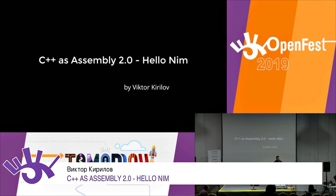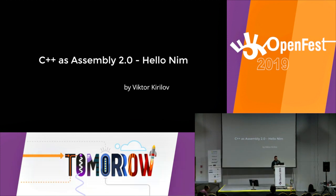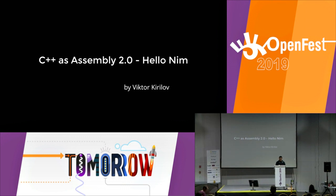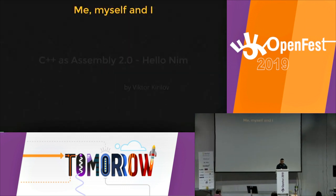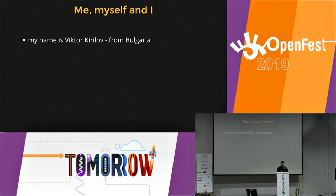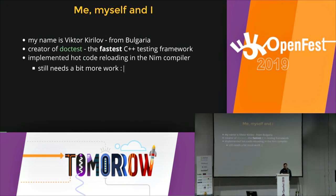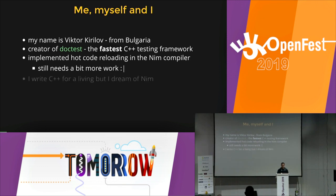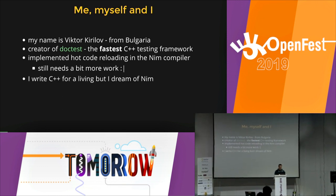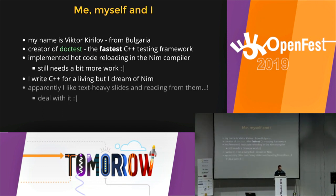Hello everybody. I'll be talking about NIM and why it makes sense to call it C++ 2.0 or something like that. A little bit about me: I'm a native, I made the fastest C++ testing framework, I implemented some functionality in the NIM compiler, and I write C++ for a living, sadly.